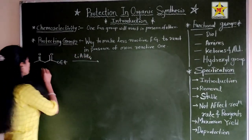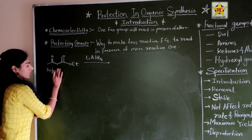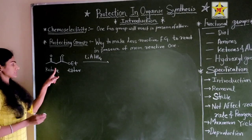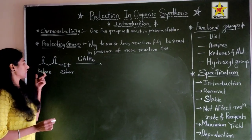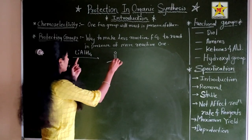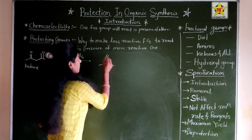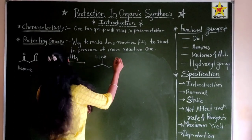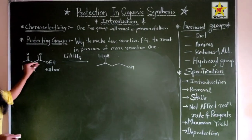Now one more example. We will take ethyl acetoacetate. In this compound, two carbonyl groups are present: one is a ketone functional group and the other is an ester functional group. If we want to reduce ethyl acetoacetate using LiAlH₄ (lithium aluminum hydride), both the ester and the ketone group will also get reduced.